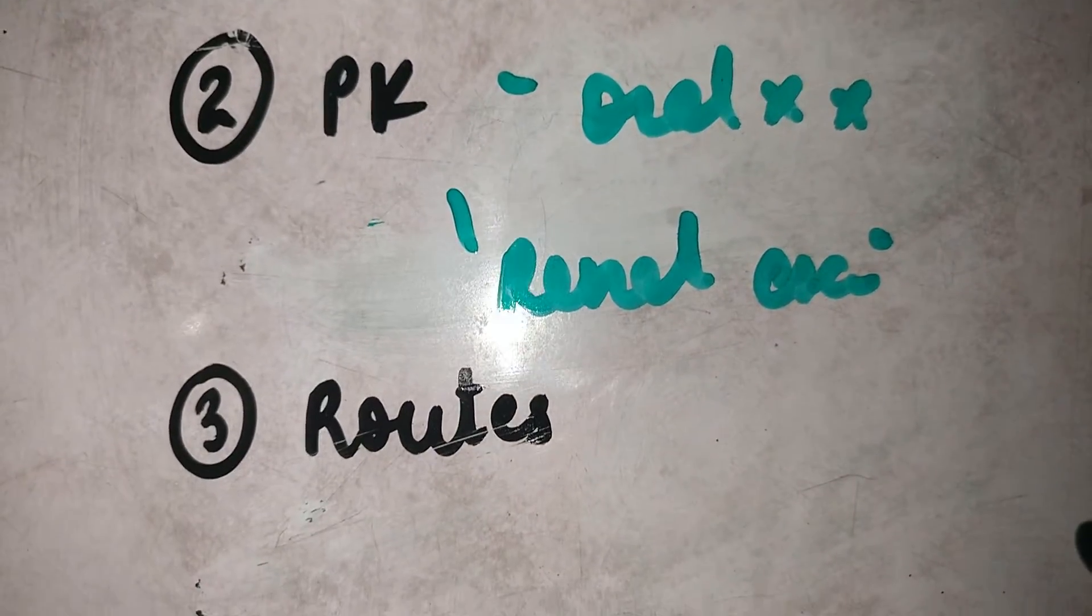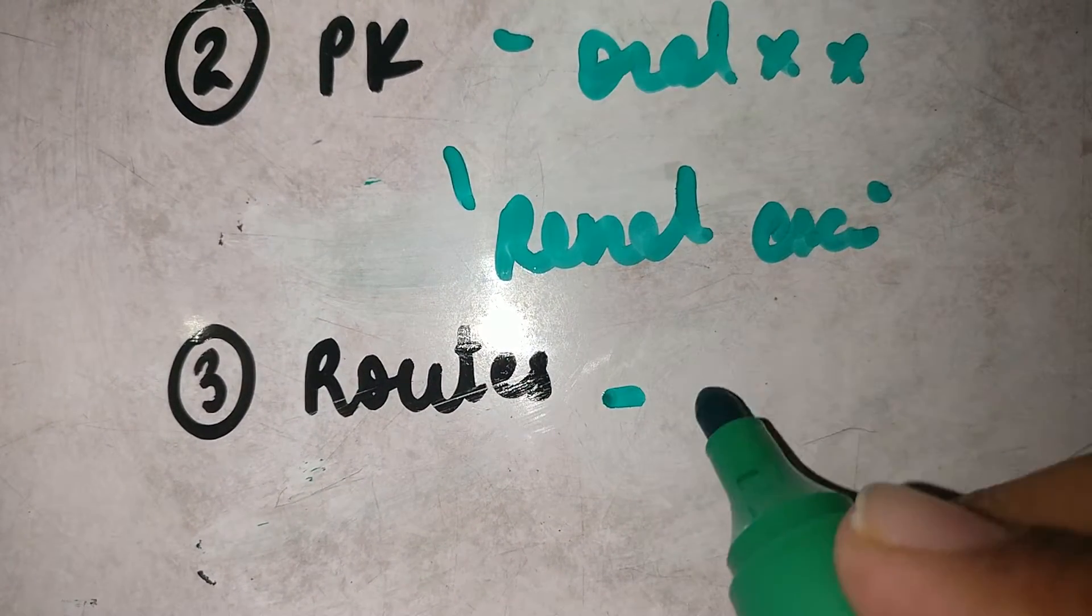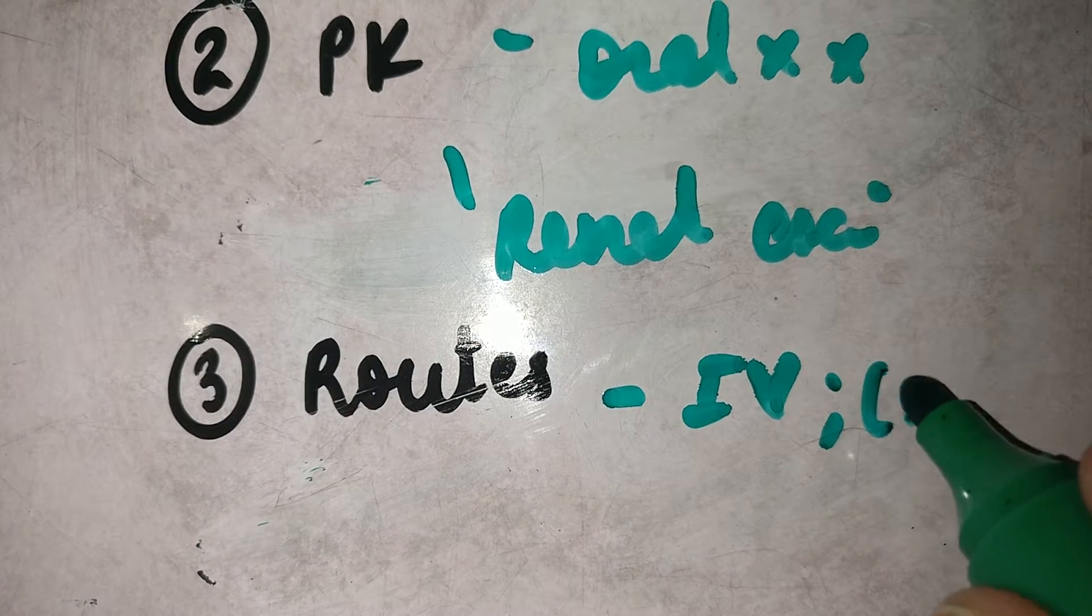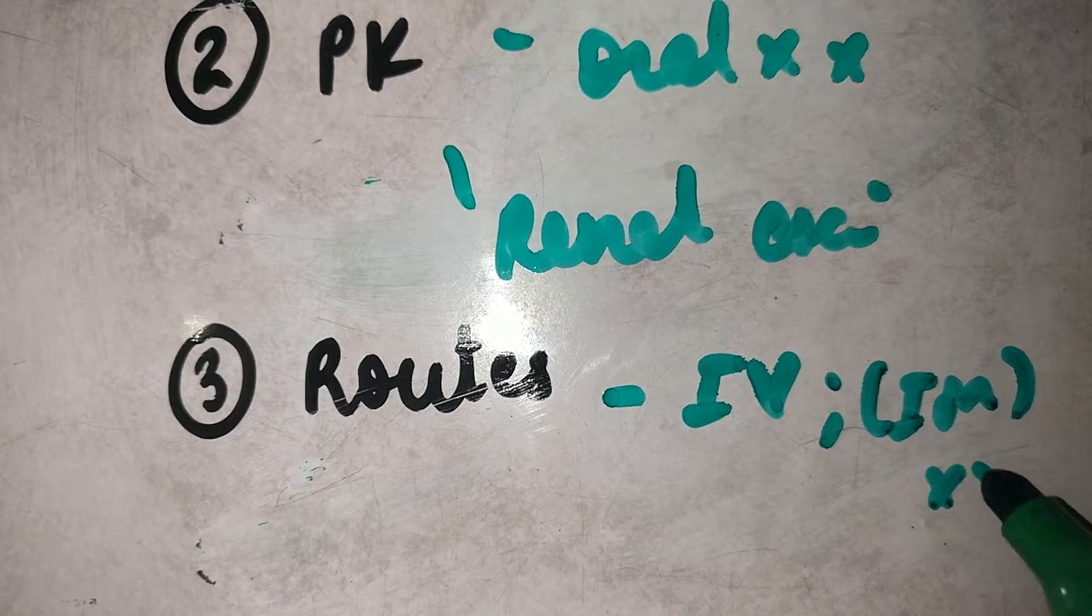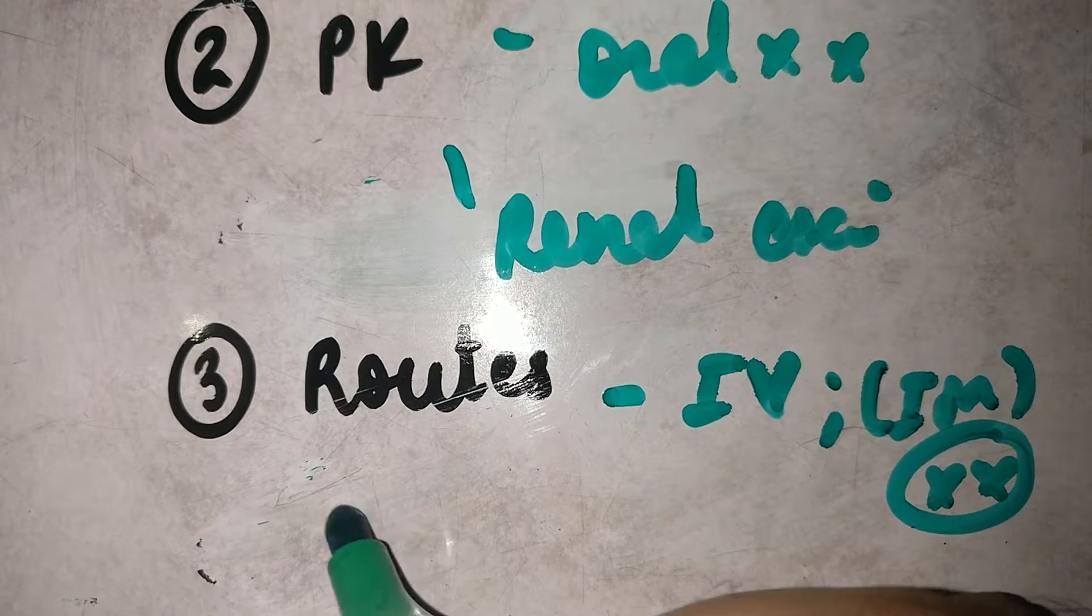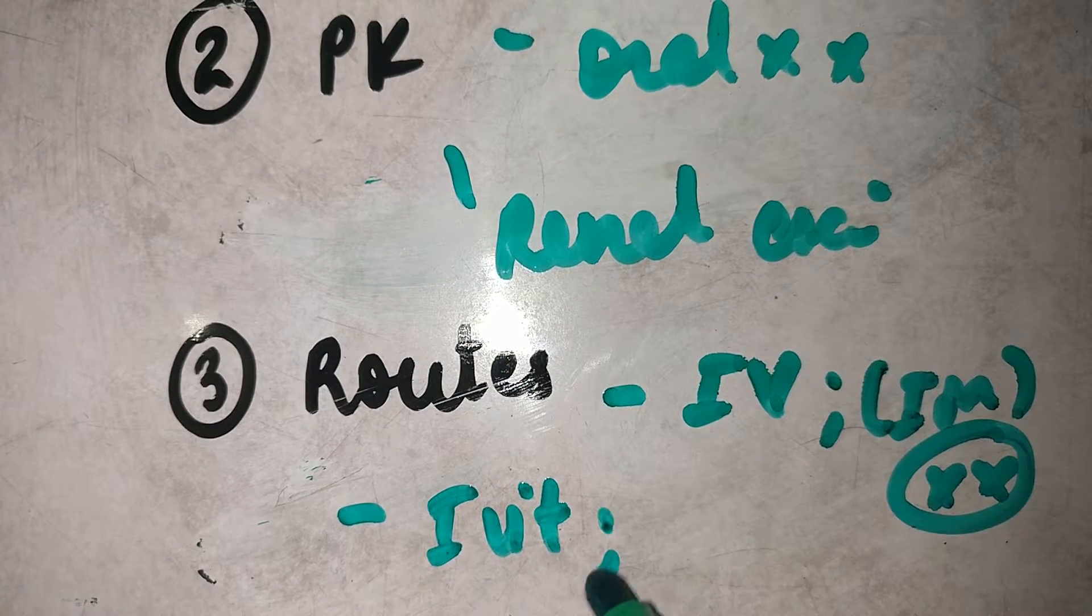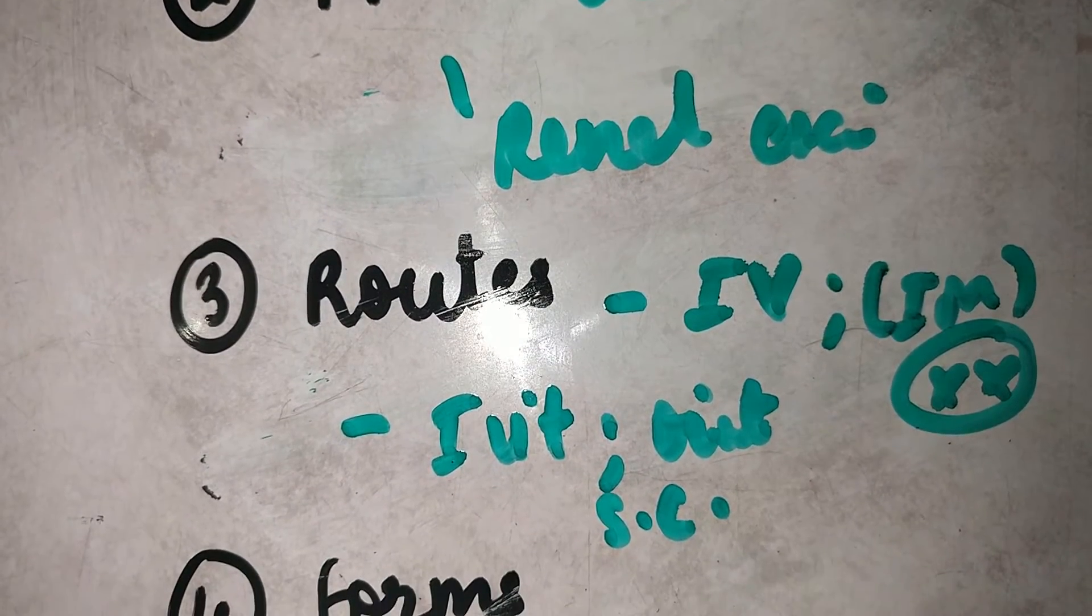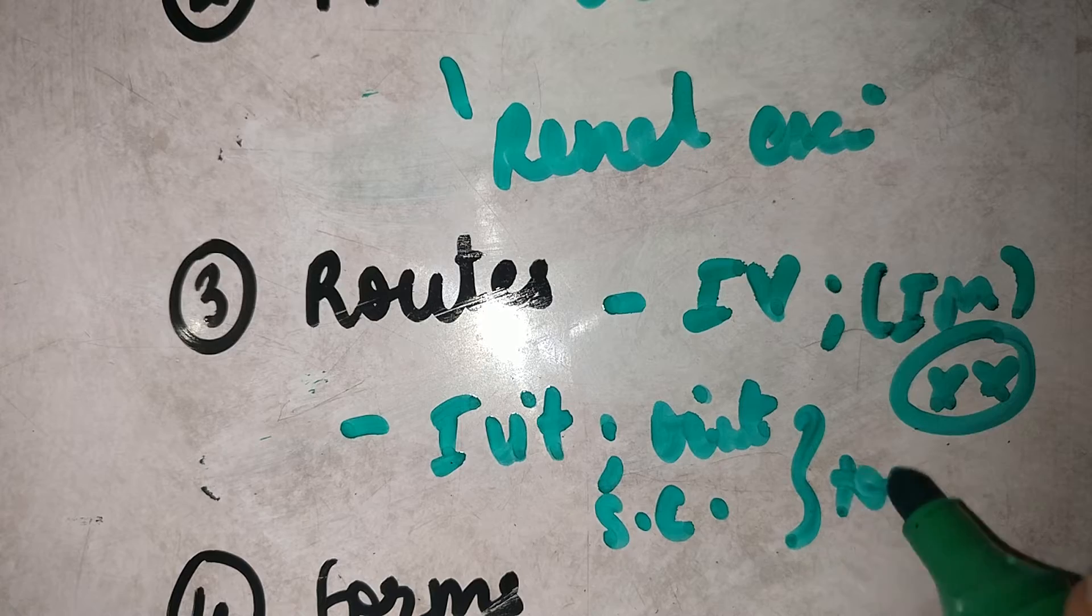Number three, the routes of administration. It can be administered systemically by intravenous route and IM route is possible but it's extremely painful so it's not preferred. Other than this, it can be given intravitreally as an ointment preparation and as a subconjunctival injection. All of these are topical preparations.